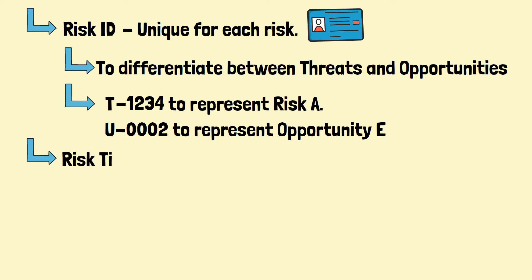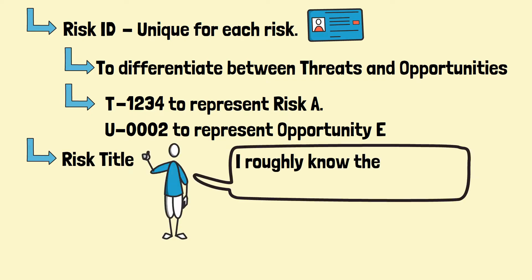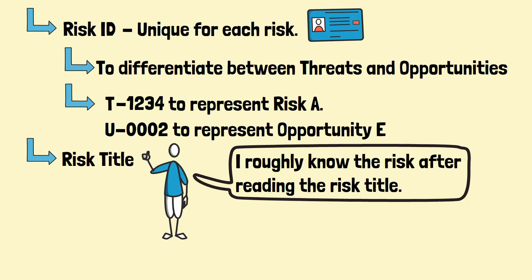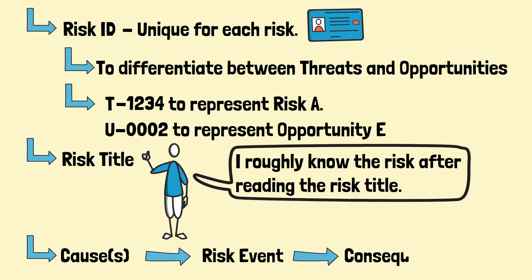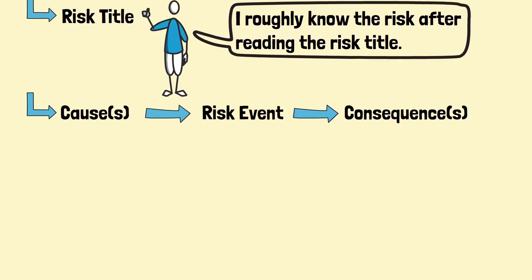Next, the risk needs a risk title. The risk title should be precise, and everyone can have a rough idea of the risk after reading it. The causes, event, and consequences information is the next critical information to be captured in the risk register.